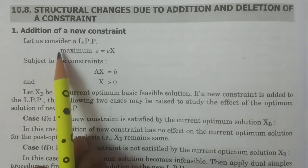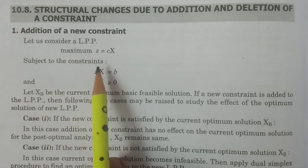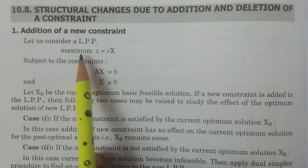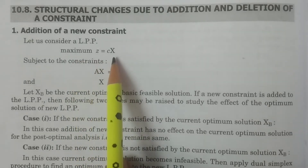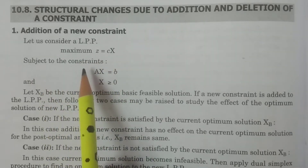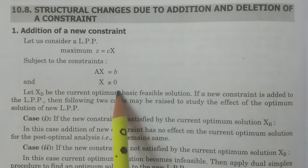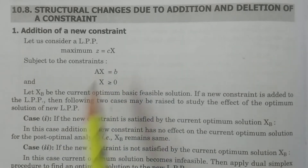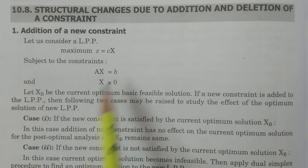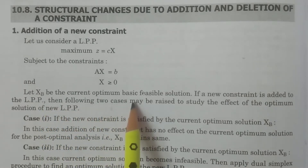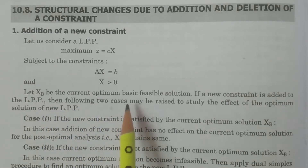Let us consider an LPP in matrix form. Maximize z equal to cx, subject to the constraints Ax equal to b and x greater than or equal to 0. This is the general LPP. The current optimum basic feasible solution is xB.